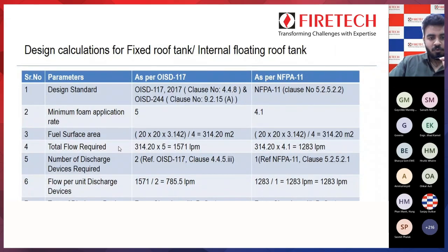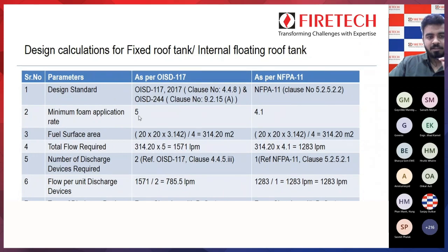The total flow required is calculated by multiplying the total surface area by the application rate. So 314.20 × 5 (the application rate) gives us a total flow required of 1571 lpm as per OSD 117. The same calculation applies for NFPA 11.